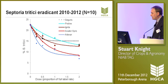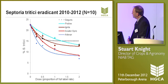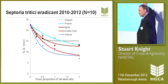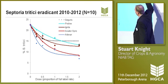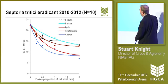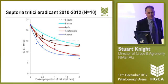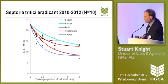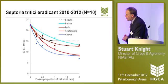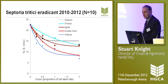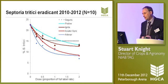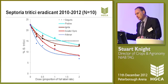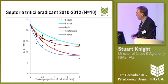In terms of eradicant activity over three years — data from 10 trials — the key point is that even the best products at double label dose are still only giving us about 50% reduction in disease. That's about the best we can expect when using these things in an eradicant situation as a single spray. Not a lot of difference between the two azoles; Proline and Ignite are pretty comparable. And the Seguris line is in similar territory to Proline and Ignite. The two leading septoria eradicants over three years have been Aviator X-Pro and Adexar.